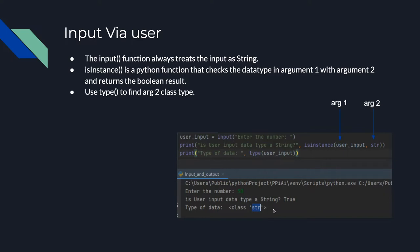You will run into an issue sooner or later where you forget that user input is always received as a string regardless of what you asked for. You'll try adding it to another number and get an error saying you can't use the plus operator with a string and an int. Just know: user input is always a string, so cast it to int if you want to treat it as an integer.